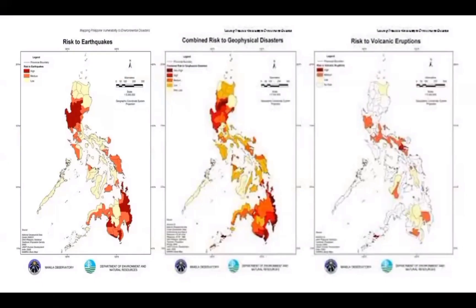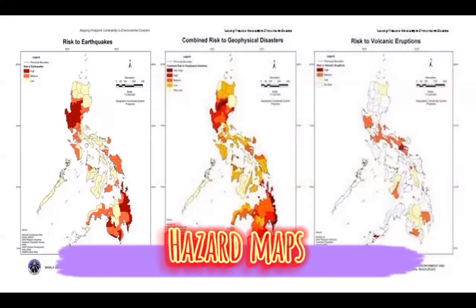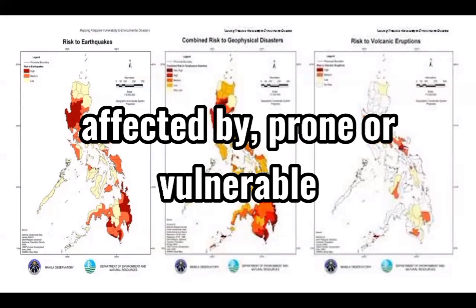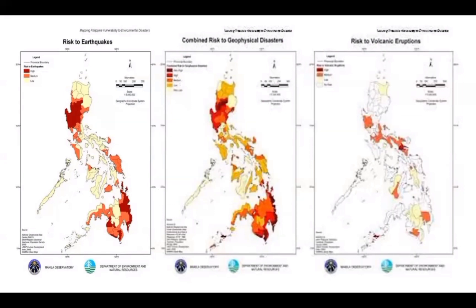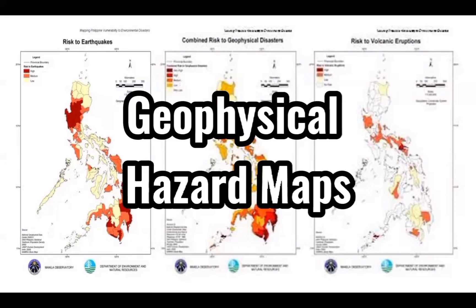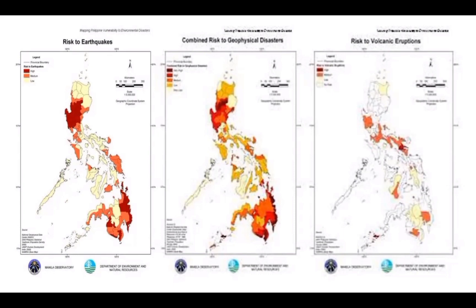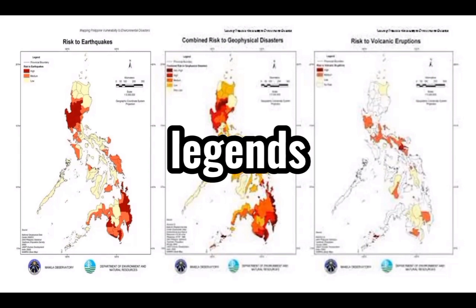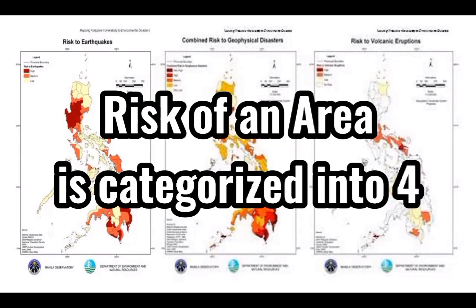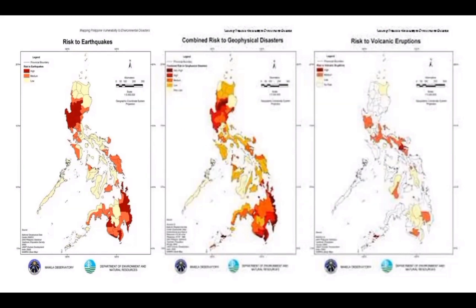And now, take a look and study these hazard maps. Hazard maps show the areas in our country that are affected by, prone, or vulnerable to a particular hazard or natural disaster. Hazard maps that show geophysical hazards like earthquakes, volcanic eruptions, and tsunamis are also termed geophysical hazard maps. It is important to take note and familiarize the legend found in each map. A line means the provincial boundary between two locations, and the risk of an area is categorized into four: high, medium, low, and no risk.